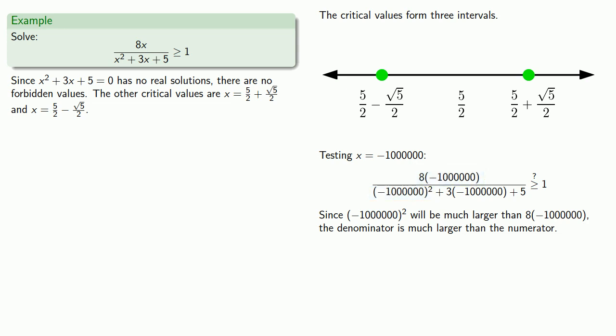And we note that minus 1 million squared will be much larger than 8 times minus 1 million. So our denominator is going to be much larger than the numerator, and so our fraction is going to be significantly less than 1. And so this inequality is false, and we exclude this interval to the way left.